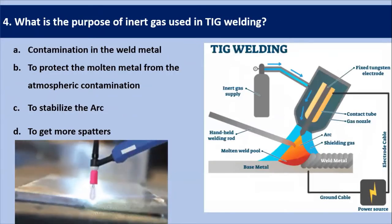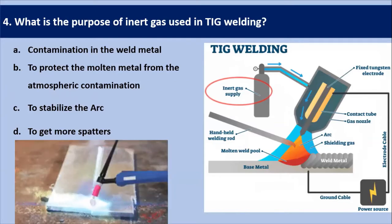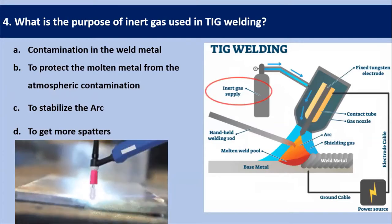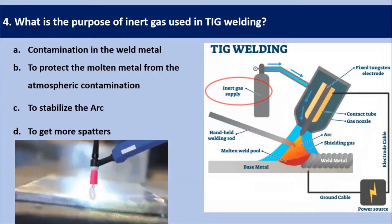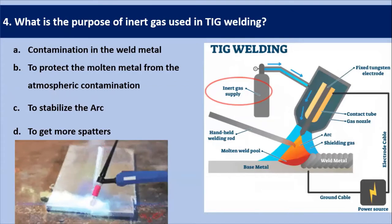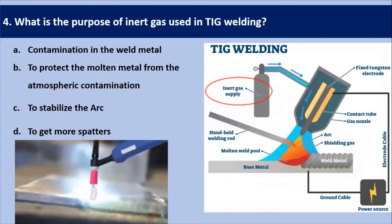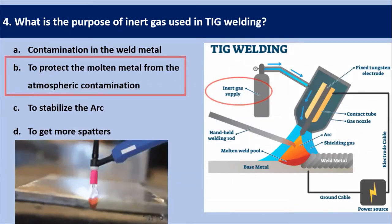Next question: what is the purpose of inert gas used in TIG welding? The inert gas used in TIG welding is argon; you can also use helium or a mixture of argon and helium. Its purpose is to protect the molten metal from atmospheric contaminations. That's why the answer is: to protect the molten metal from atmospheric contamination.